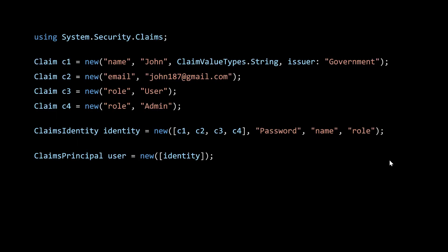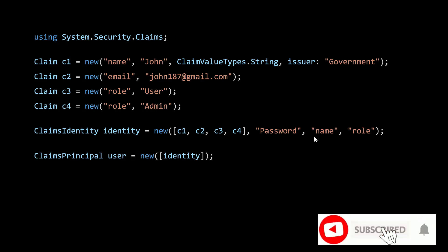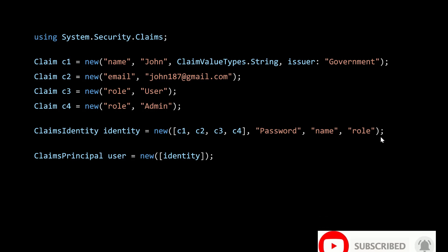Now let's talk about the claim, claims identity, and claims principle classes in .NET. There are security frameworks like ASP.NET Core identity, or you can implement your own identity framework using cookies or tokens. Those frameworks use these classes to maintain the claims principle, claims identity, and claim about the user. There is a class called Claim, and you can create a claim simply using a key and value. Claims identity is a collection of claims, so you can create a claims identity using a list of claims. You can have multiple claims with the same key — for example, a user can have multiple roles.